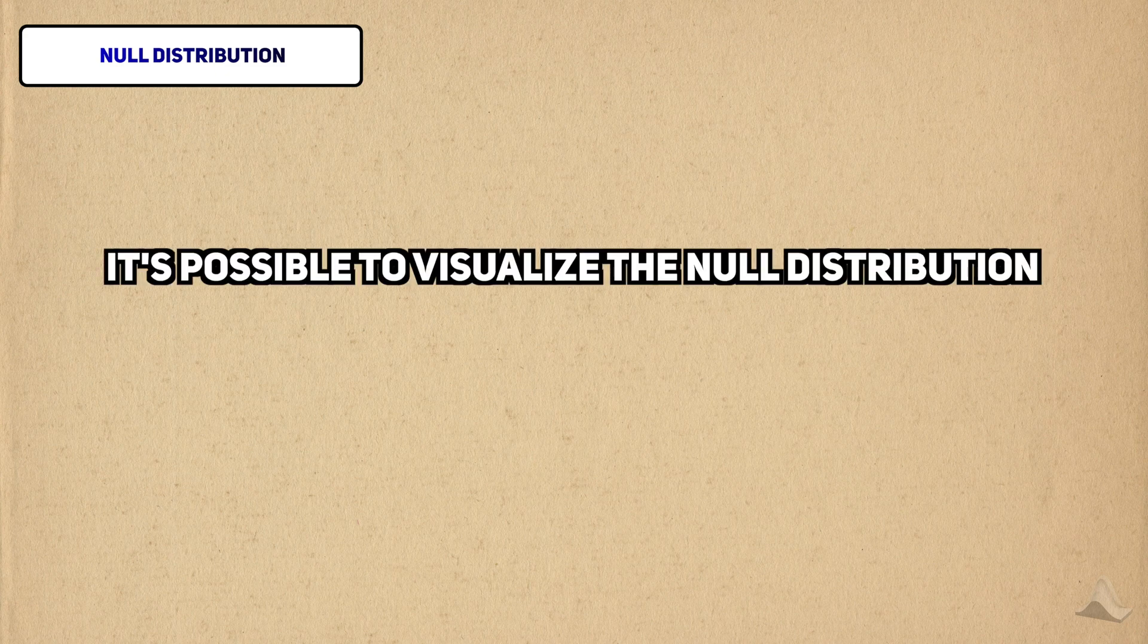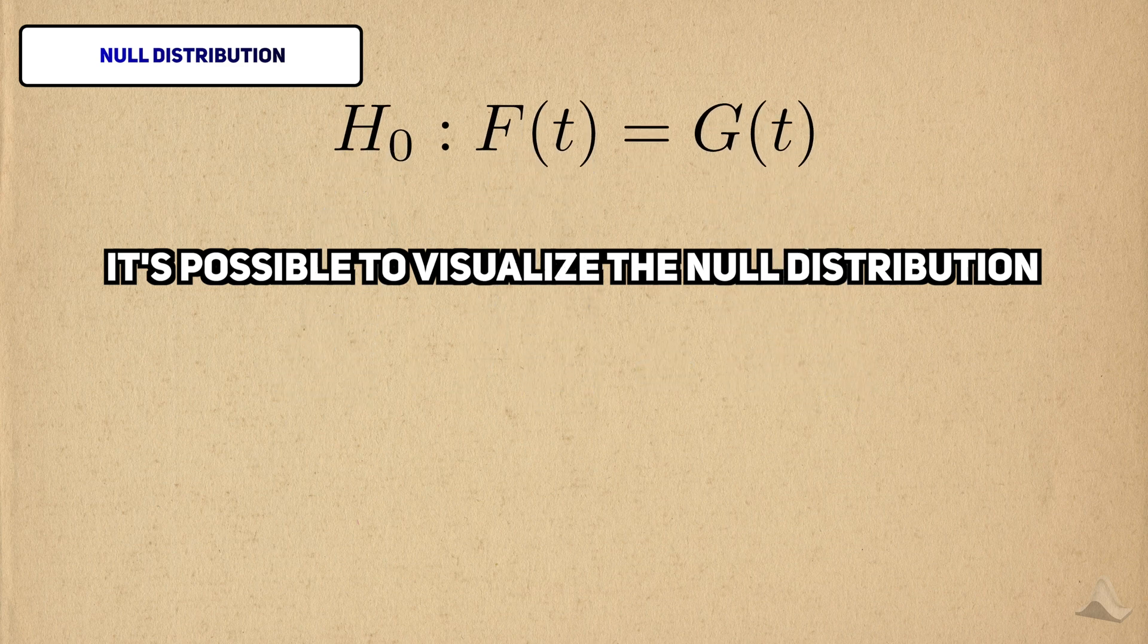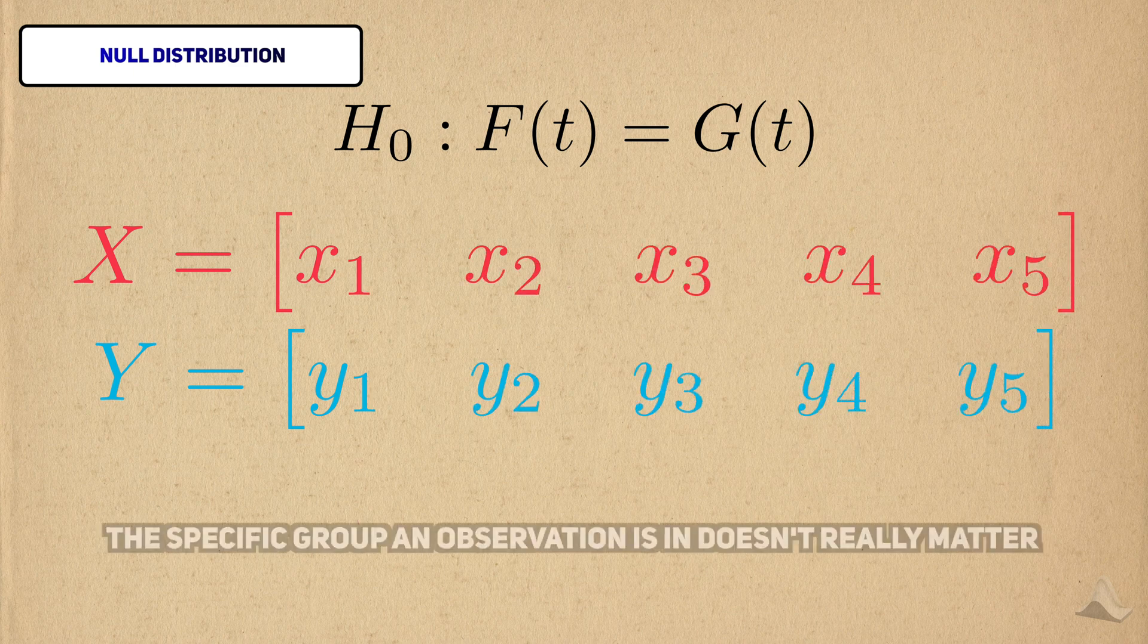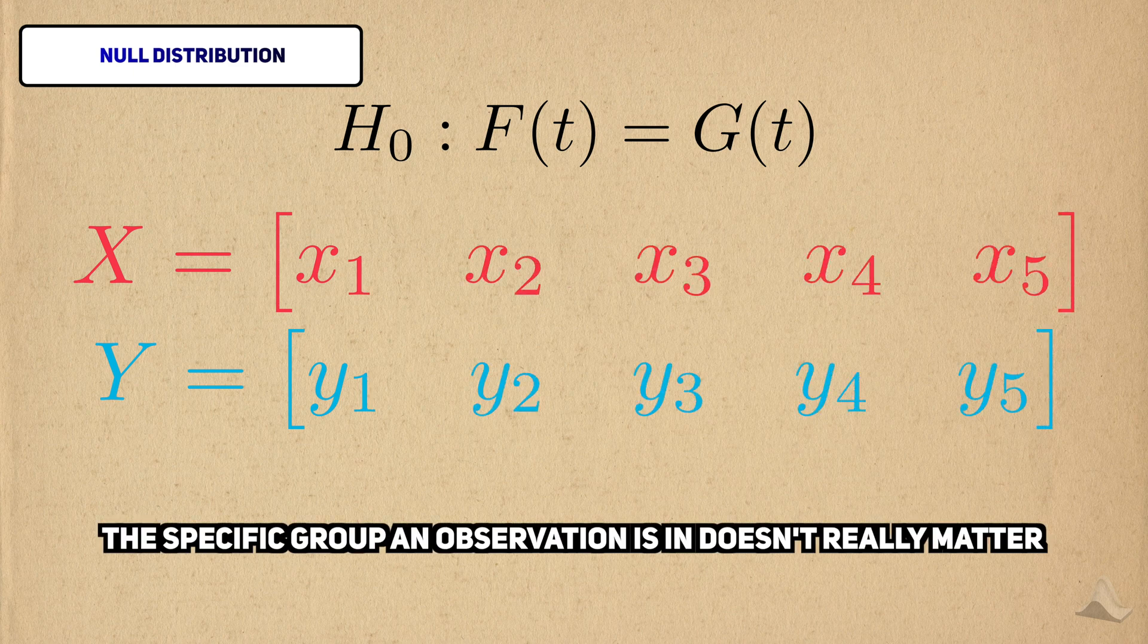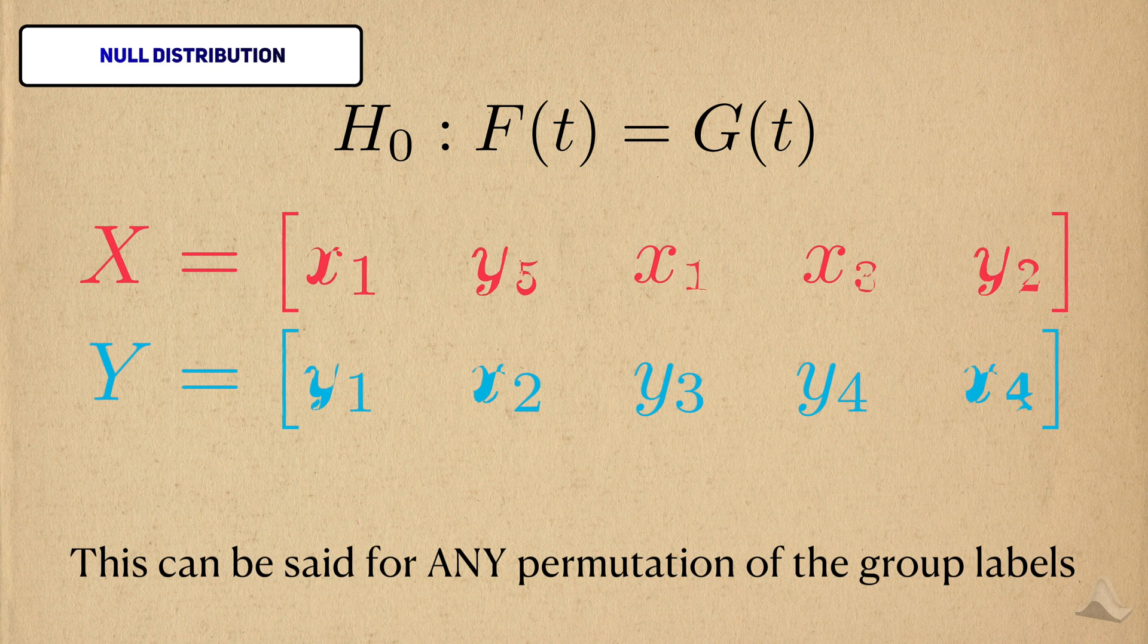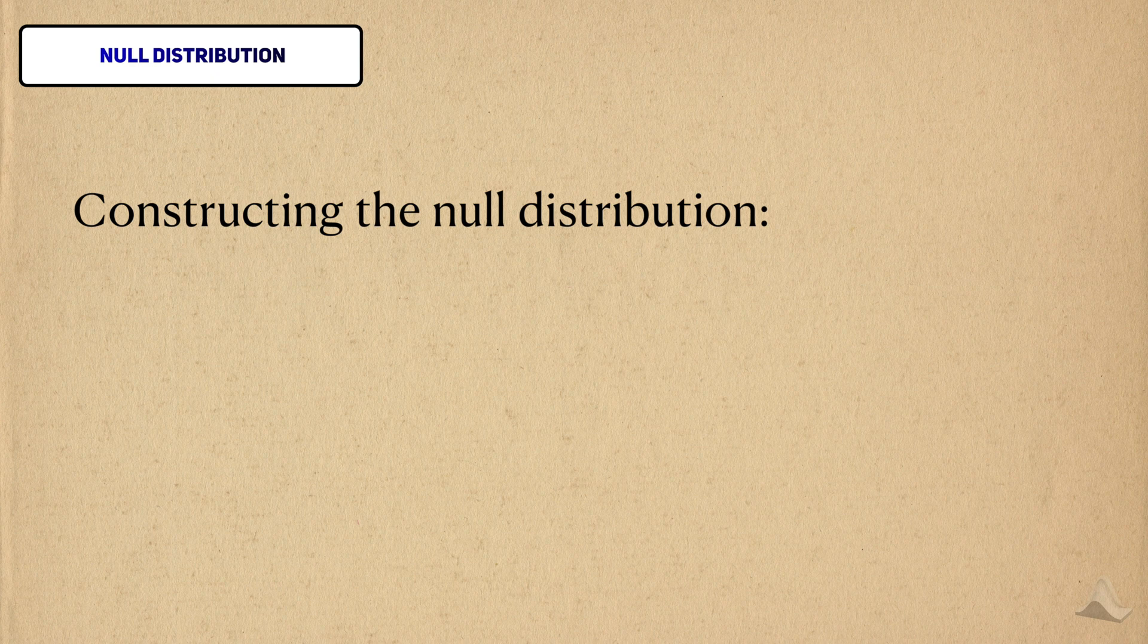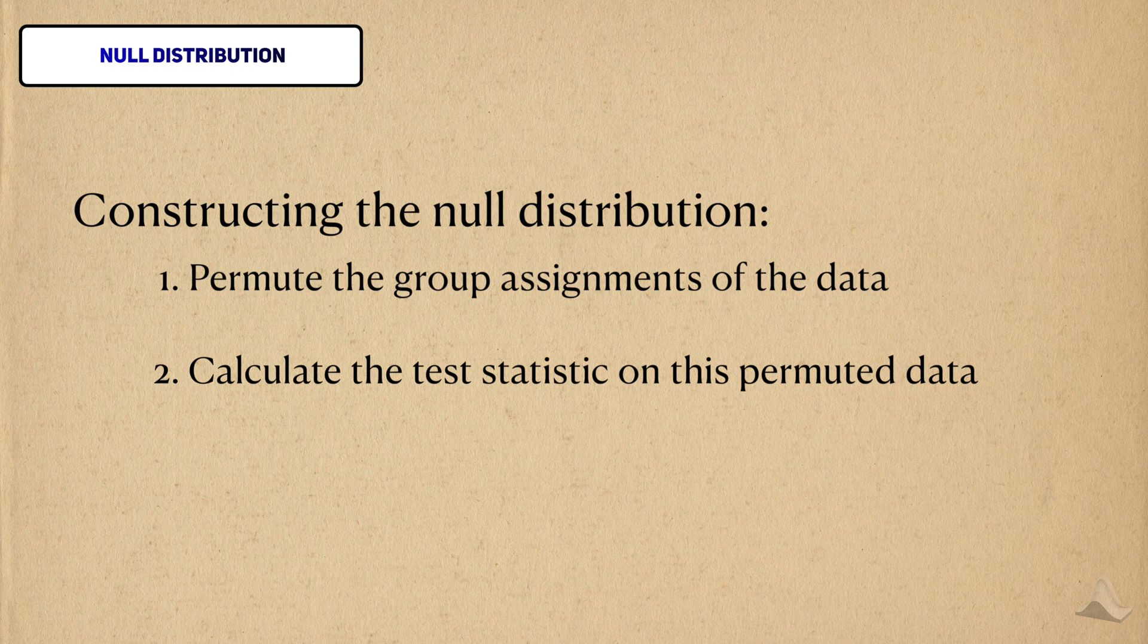Once the test statistic is calculated, we have to be able to compare to a null distribution to calculate a p-value. It's possible to visualize a rough approximation of the null distribution thanks to what the null hypothesis is. Under the null hypothesis, the two groups have the same distribution. What that implies is that the specific group that an observation is assigned to doesn't really matter. If we switch the label of the first observation of each group, it would be difficult to tell from the data itself that we made the switch. In fact, we could scramble all of the group labels and still not be able to easily tell. To construct the null distribution, we can repeat the following process. Scramble the group assignments across all of the observations, calculate the test statistic, and repeat this for all the possible permutations.